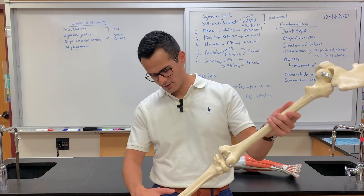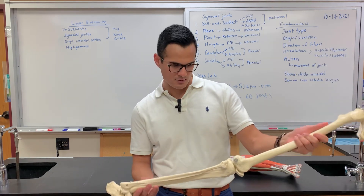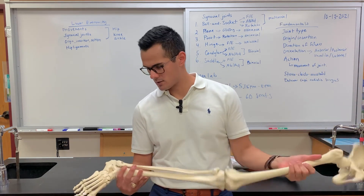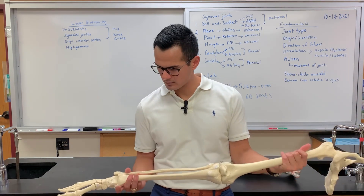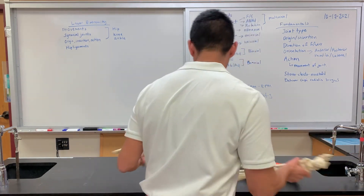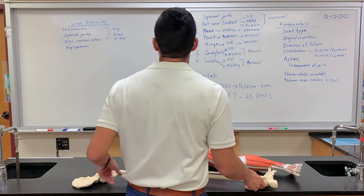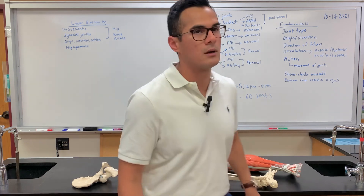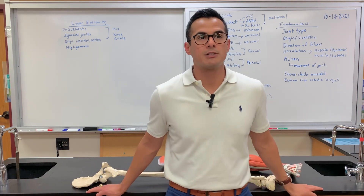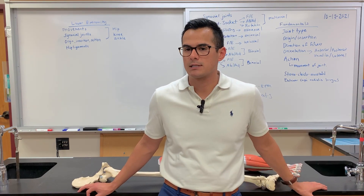We've covered the hip flexors, extensors, abductors, adductors, lateral rotators, and the muscles of the lower leg including the tibialis anterior, extensor digitorum, gastrocnemius, and soleus. That'll do it for this lecture — any questions?